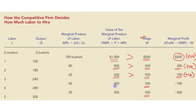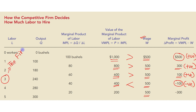Now the fourth worker generates additional revenue of $400, which is less than the wage of $500. Profit = $400 − $500 = −$100, which is negative. Hiring the fourth worker is unprofitable. So the firm will hire only three workers.